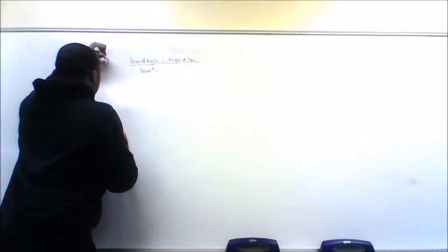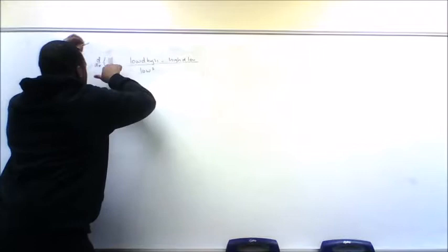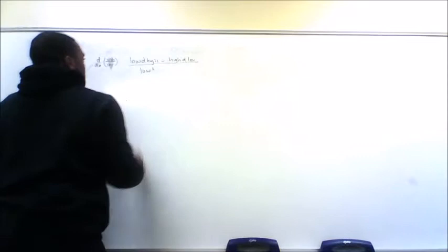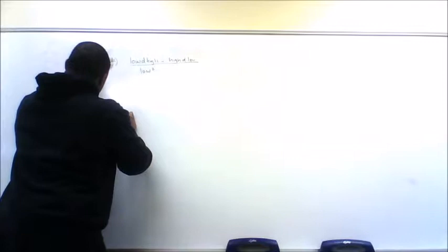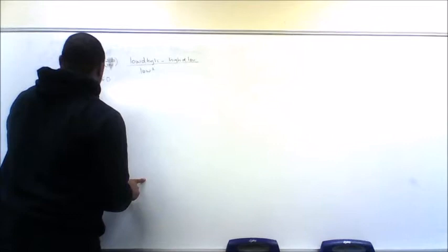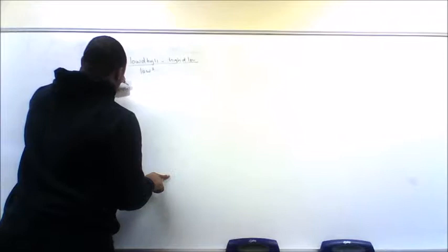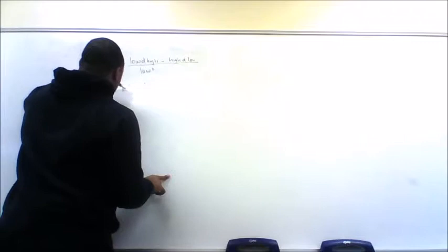So that's the derivative of high over low — that is, the derivative of u over v equals v times u prime minus u times v prime, all over v squared. You also need to know that the low cannot equal zero, meaning v cannot equal zero.